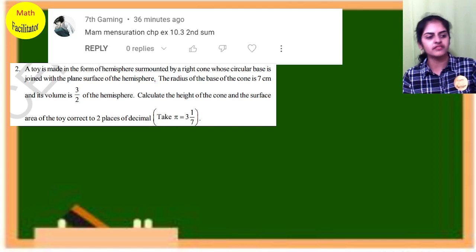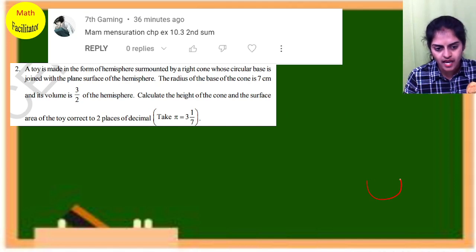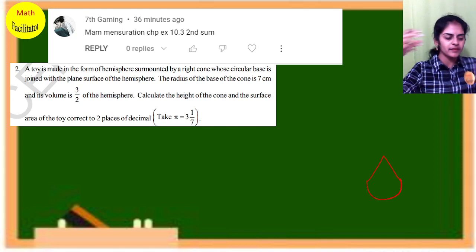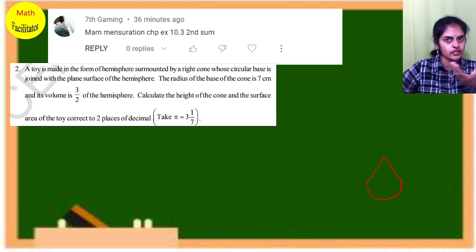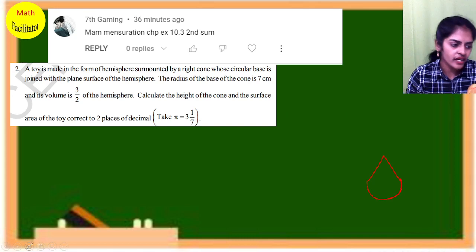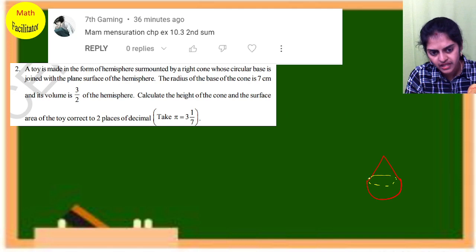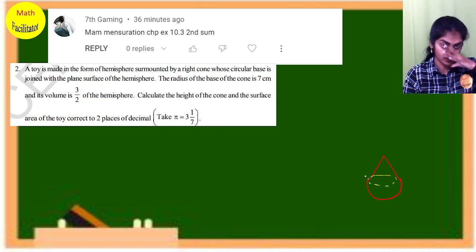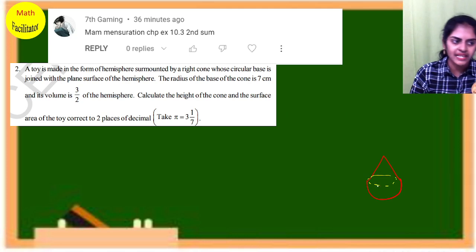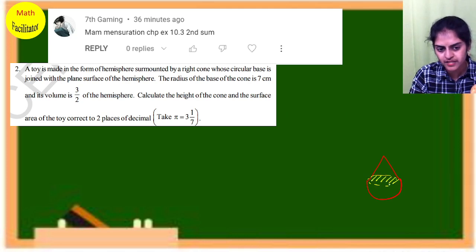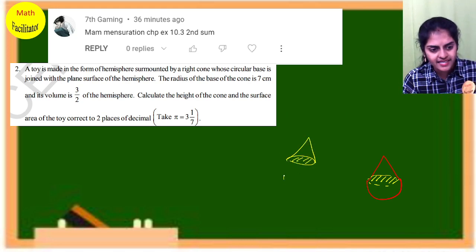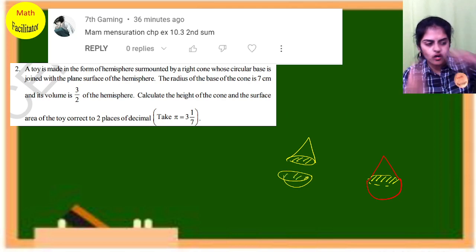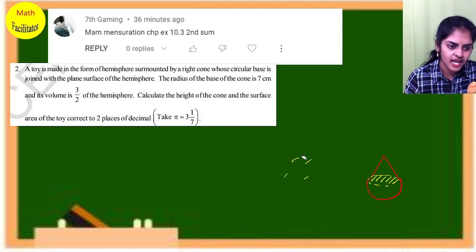A toy is made of a hemisphere surmounted by a cone. Surmounted means the cone is above the hemisphere. The circular base of the cone is joined with the plain surface of the hemisphere. So these two circular bases are joined together.